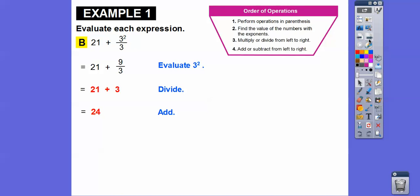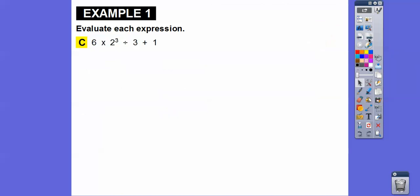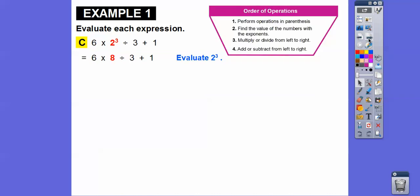Students make a lot of careless errors because they do the wrong order, so make sure you're following the order of operations correctly. Let's do this exponent first: two times two times two is eight.